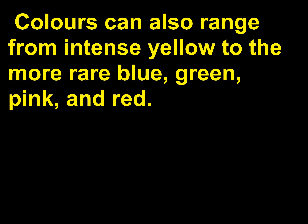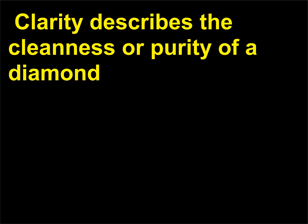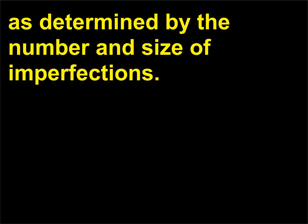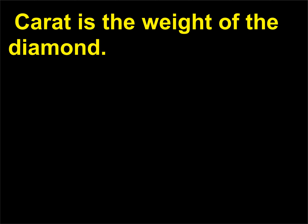Colors can also range from intense yellow to the more rare blue, green, pink, and red. Clarity describes the cleanness or purity of a diamond, as determined by the number and size of imperfections. Carat is the weight of the diamond.